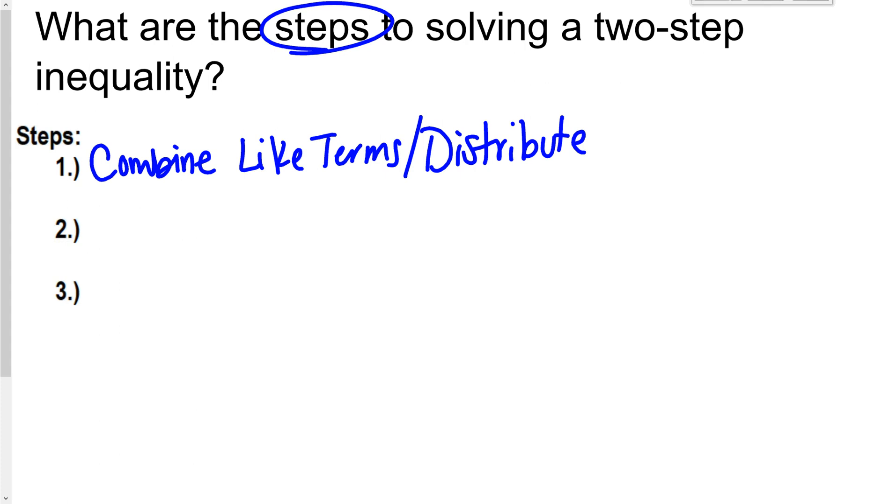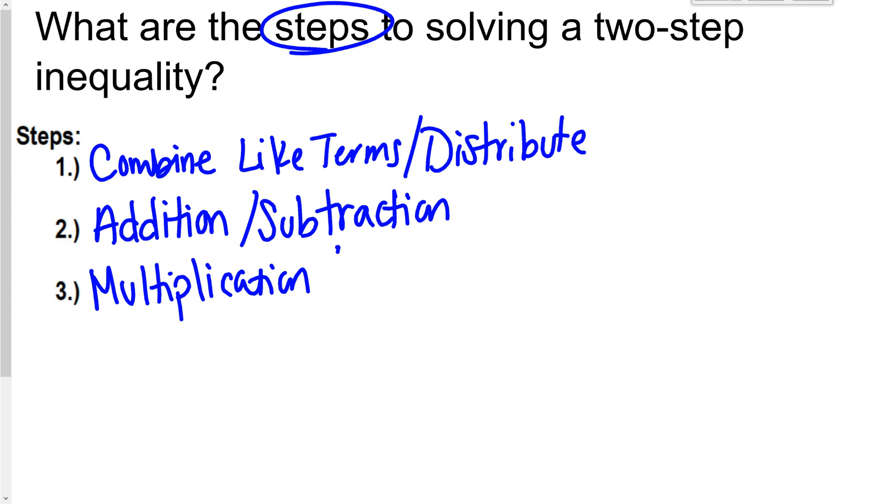After we do that, then we should have just a two-step inequality. Then remember, we're always going to get rid of the addition or subtraction first, and then we'll get rid of the multiplication and division last.